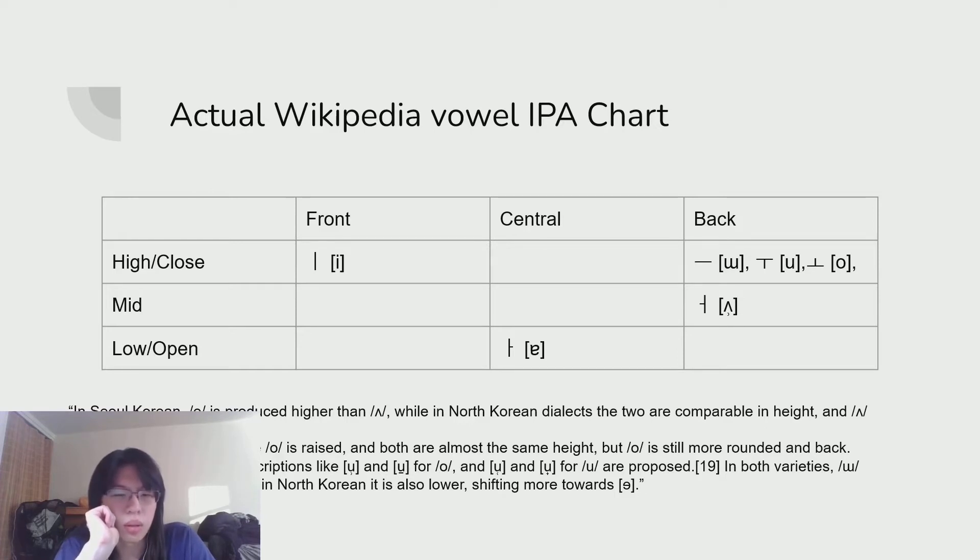And then in Seoul, u is fronted while o is raised, and both are almost the same height, but o is still more rounded and back. Due to that, alternative transcriptions like ʊ with more rounding and ɯ that is retracted for o, and ɯ with less rounding and ɯ that is pulled forward for u are proposed. In both varieties, ʌ is fronted away from ɯ. Now excluding the beginning bit for a second, that would mean the ɯ is a central vowel, which honestly I can't tell the difference anyway. The u and o is interesting, the u and o vowels being the same height but one is fronted and the other one isn't.